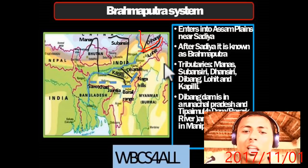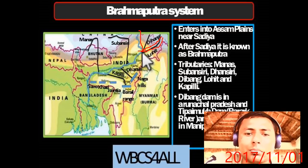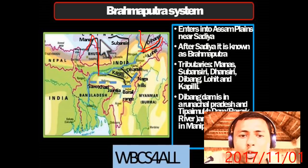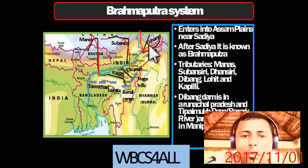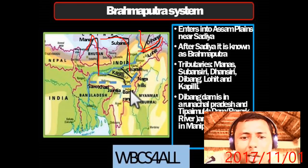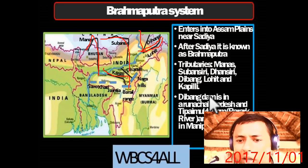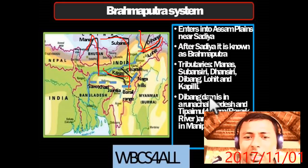The important tributaries of Brahmaputra are Manas, Subanshiri, Dibang, Lohit, and Kapili. Remember Kapili comes from the Barail range. One more important river is Dhansiri, which comes from the Naga Hills.